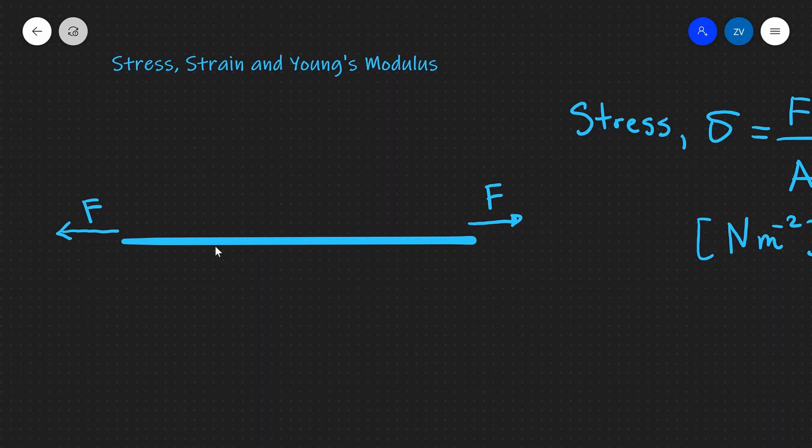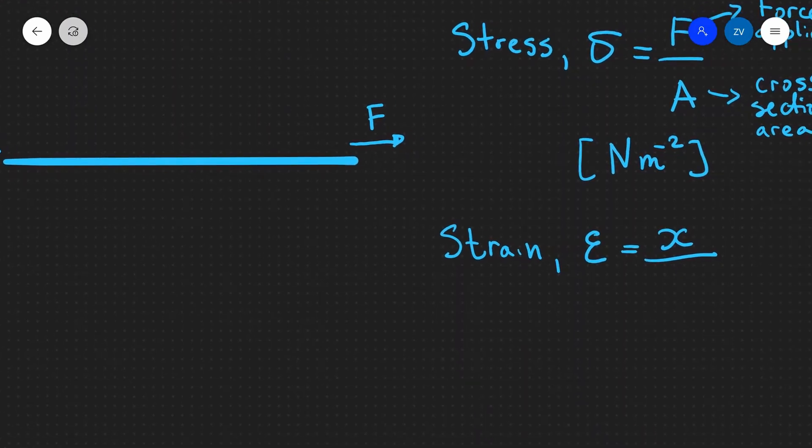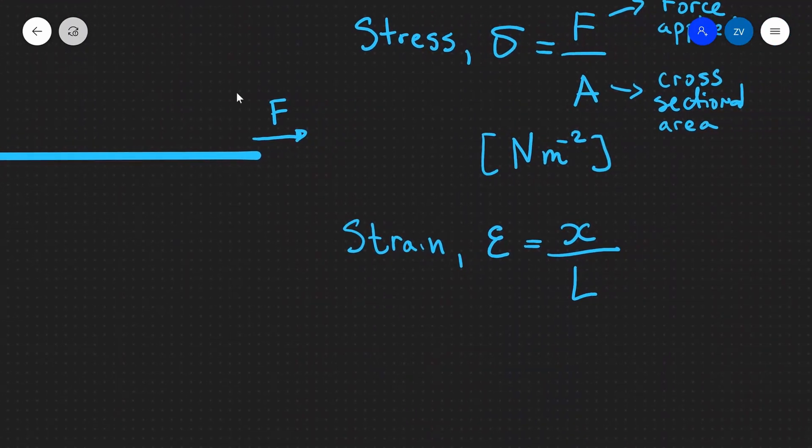Now let's have a look at the next quantity, which is strain. Strain is normally given the Greek letter epsilon (ε). Strain is defined as the extension as a proportion of the original length of the material. So x is your extension, and L is your original length.